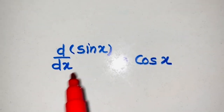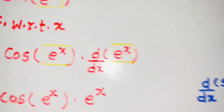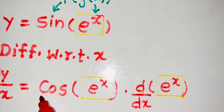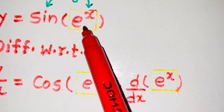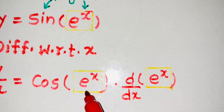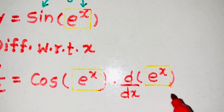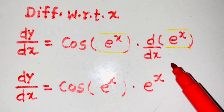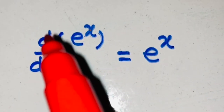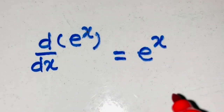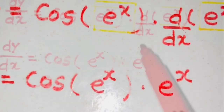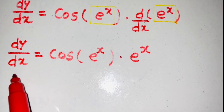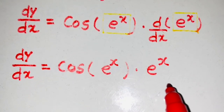You know that the derivative of sine x is cos x. So the outer function sine gets differentiated to cos, x is replaced by the new function g of x which is e raised to x — that remains as it is — into the derivative of that box, which is e raised to x. Since the derivative of e raised to x is e raised to x, the final answer is: dy upon dx is equal to cos of e raised to x into e raised to x.